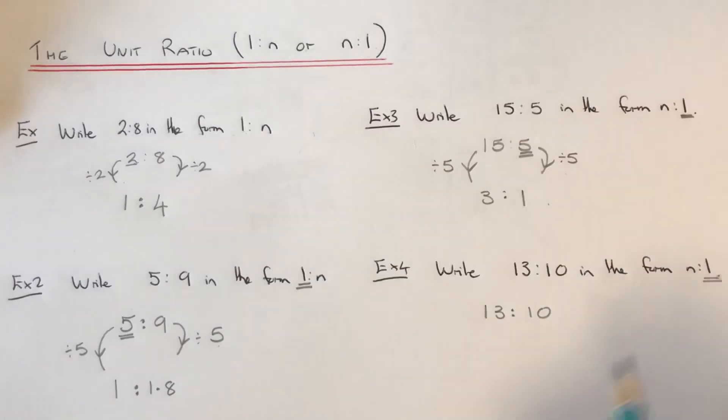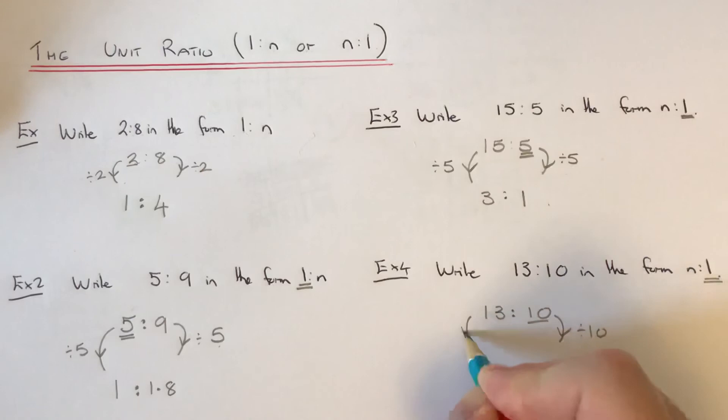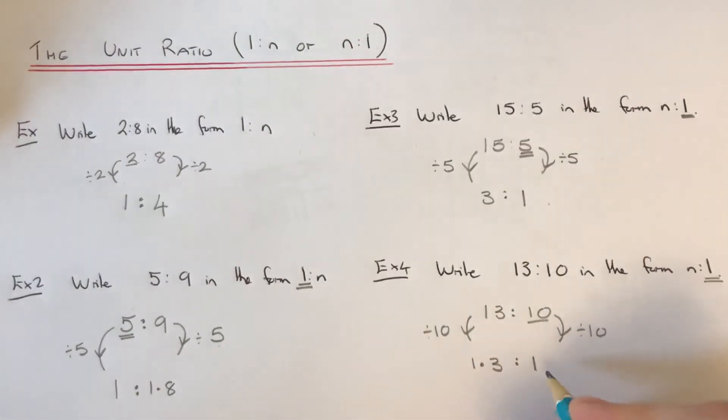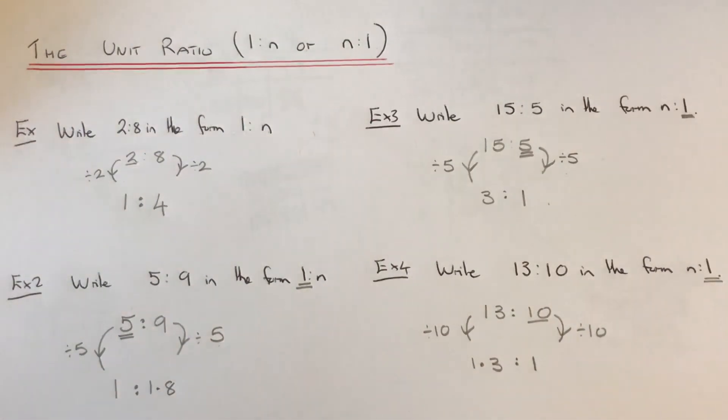So again, we want the 1 on the right hand side of the ratio. So we divide both sides of our ratio by 10. So 13 divided by 10 is 1.3. Or you can leave it as 13 tenths if you're unsure. And 10 divided by 10 is 1. And there's our unit ratio.